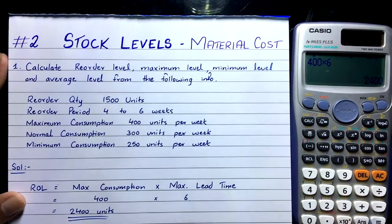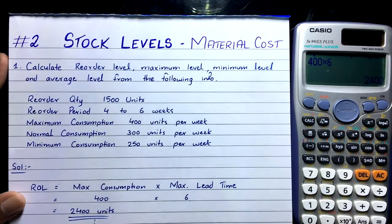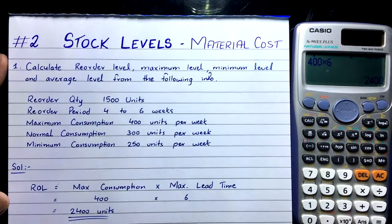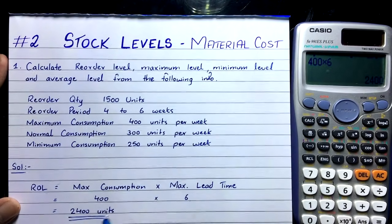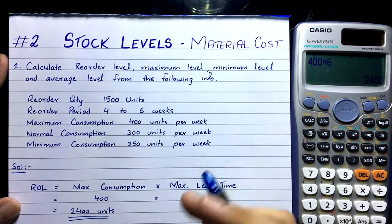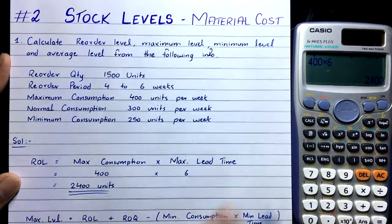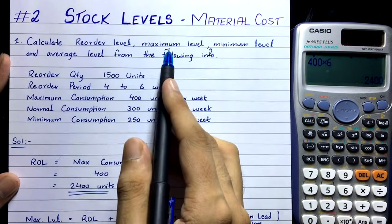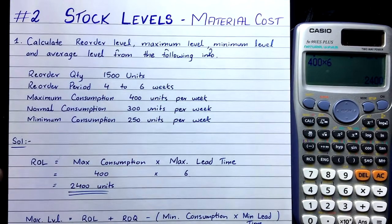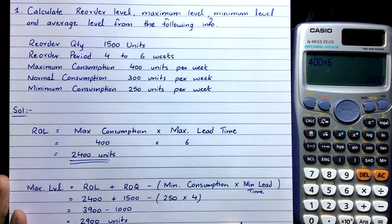So, 400 × 6 = 2,400 units. The reorder level is 2,400 units. When our stock reaches this level we place a fresh new order — that is what the reorder level means.